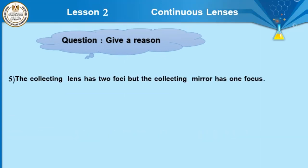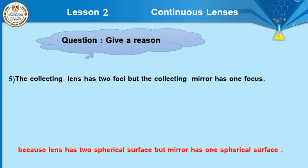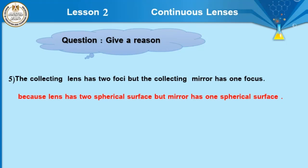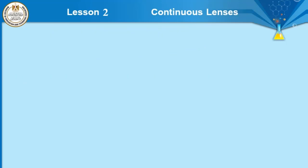Number 5: a collecting lens has two foci, but a collecting mirror has only one focus. Why? Because a lens has two spherical surfaces, but a mirror has only one spherical surface.